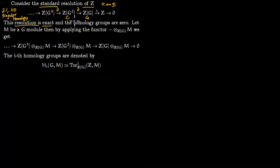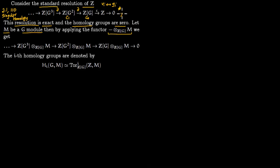Since the resolution is exact, the kernel equals the image, and therefore if you try to compute homology groups they are all zero. Now say M is a G-module; you can apply the tensor functor to this exact standard resolution. So you tensor each term and obtain a new complex. You drop the term corresponding to the augmentation map — the term C ⊗_{ZG} M. So this is no longer exact because you have dropped a term.